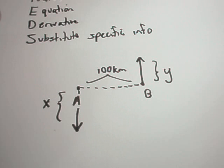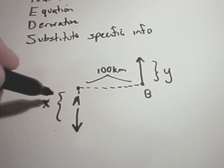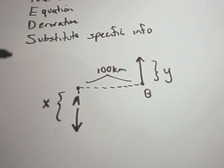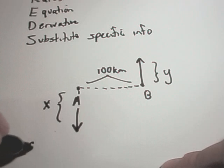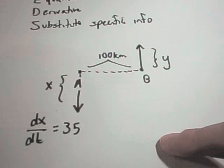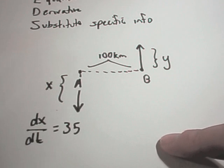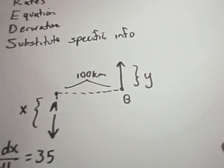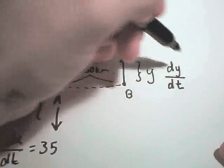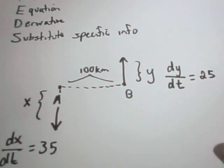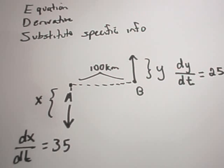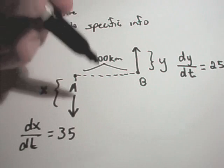They also tell me the rate at which these ships are changing. So this is where you use your rates. So it says ship A is sailing south at a rate of 35 kilometers an hour. The way that you can write that is, well, the change in the X direction with respect to time is 35 kilometers an hour. And I'm going to leave my units off because I'm lazy. Ship B is sailing north, so the change in the Y direction and the Y length with respect to time was 25 kilometers an hour.